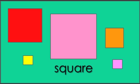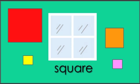This is the shape of a square. A square comes in different colors and sizes. Look around to find things shaped like a square. This window is a shape of a square.